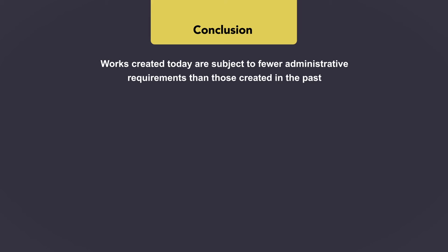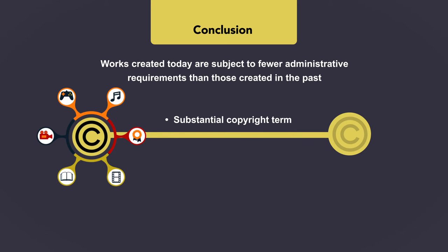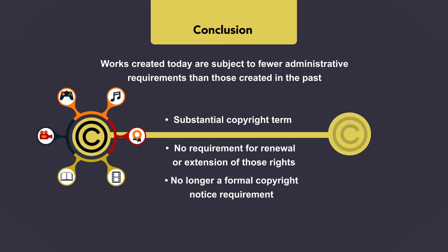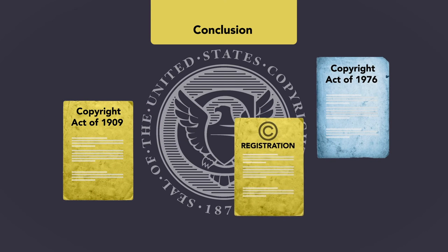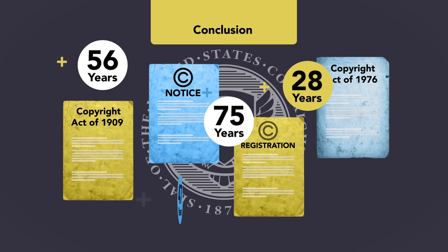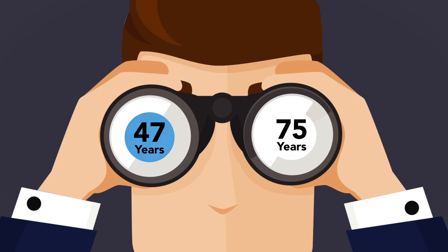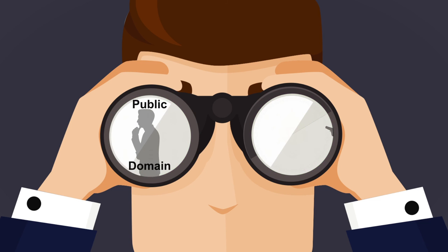Works created today are subject to fewer administrative requirements than those created in the past. New works receive copyright protection immediately upon fixation in a tangible medium of expression, are subject to a single substantial copyright term, with no requirement for renewal or extension of those rights, and there is no longer a formal copyright notice requirement. The key modern trends in U.S. copyright law involve efforts to make administration more efficient and continuing extension of copyright terms. While there has been an ongoing effort to extend the duration of copyright protection — largely driven by business interests protecting significant investments in creative assets — there is a risk that ever-longer copyright terms could threaten the vitality of the public domain and impede future creativity and innovation.